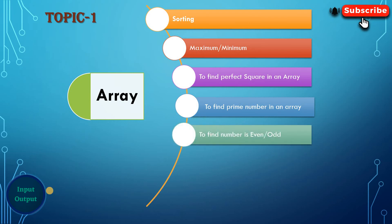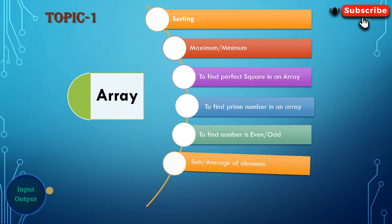Our next question is to find whether a number is even or odd. These exact types of questions may not be asked in TCS NQT, but some different variations — by adding some constants — can appear. Basically, in the TCS NQT exam you will get basic to intermediate type questions, so the questions will not be too hard.